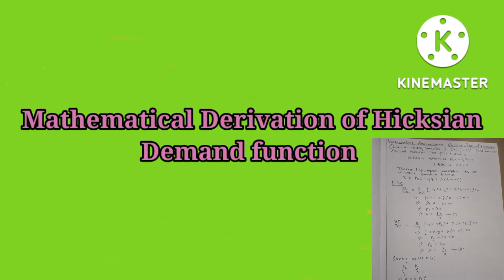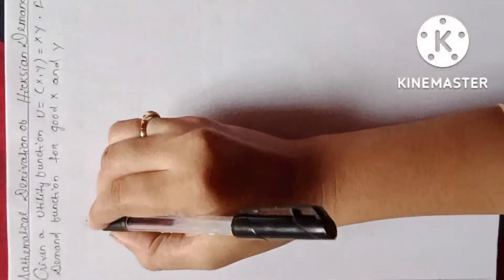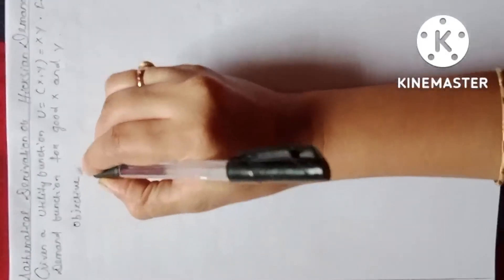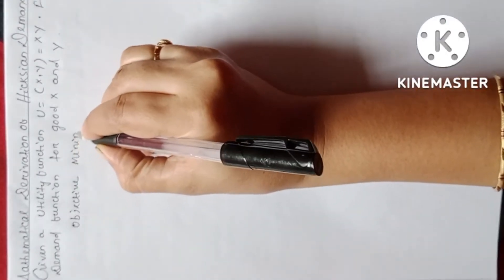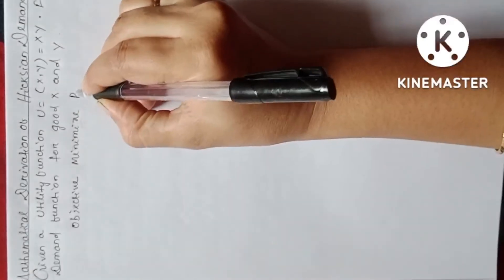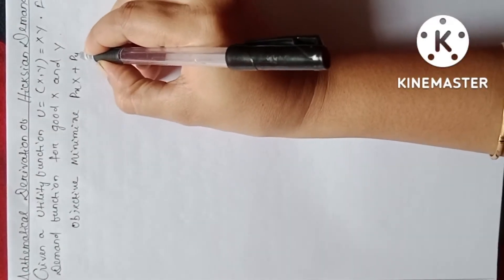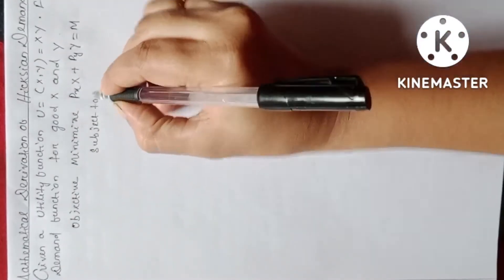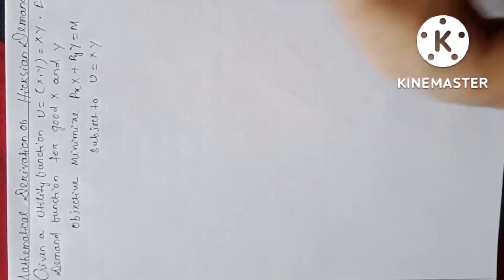The Hicksian Demand Function is derived from the problem of minimizing the total cost of achieving a certain level of utility. The objective is to minimize PX·X plus PY·Y equal to M, subject to the constraint U equal to X·Y.